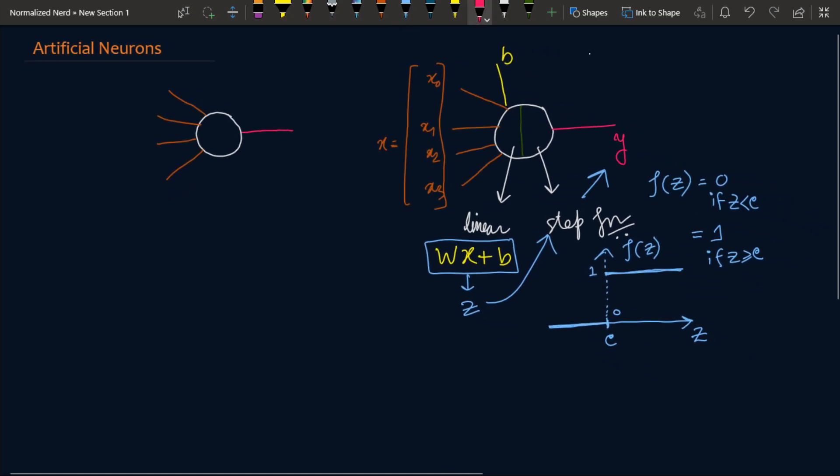Let me draw the computation graph. I'm giving it x, it produces w x plus b, then we treat this as z, and then we calculate f of z which is our y, and this is actually zero or one. So this was perceptron - it just acts as a binary classifier.